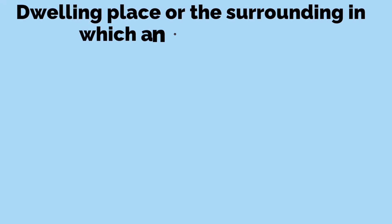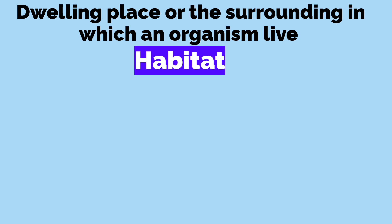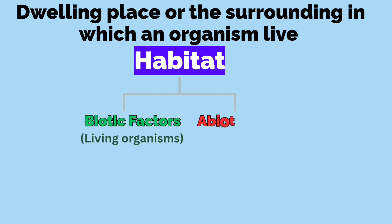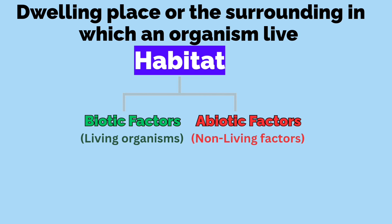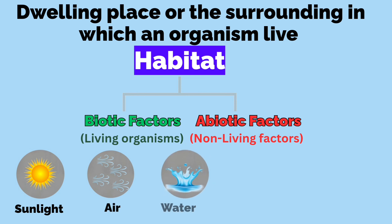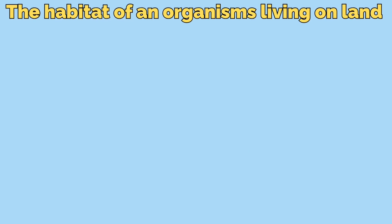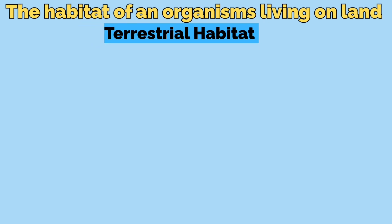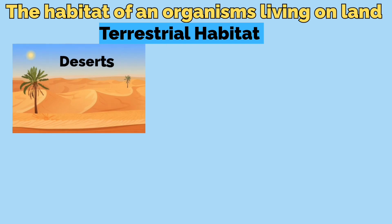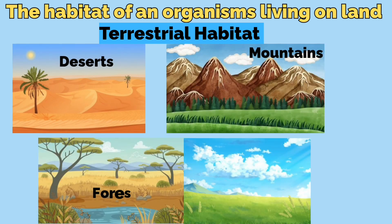The dwelling place or the surrounding in which an organism lives is called its habitat. Every habitat has a biotic factor which consists of living organisms, and an abiotic factor which consists of non-living factors such as sunlight, air, water, and temperature. The habitat of organisms that live on land is called terrestrial habitat. Some of the terrestrial habitats are deserts, mountains, forests, and grasslands.